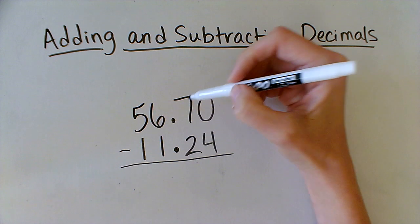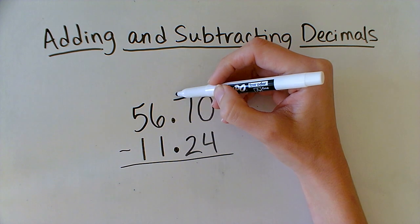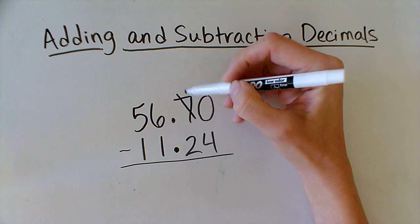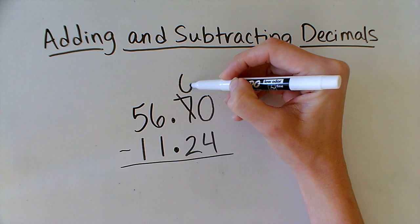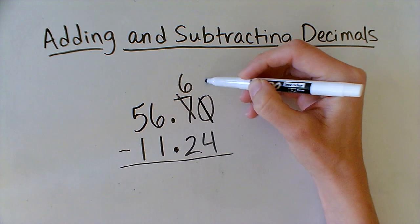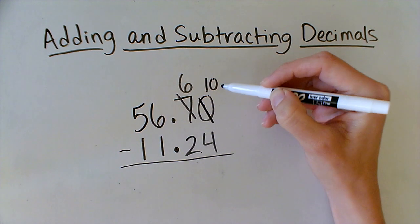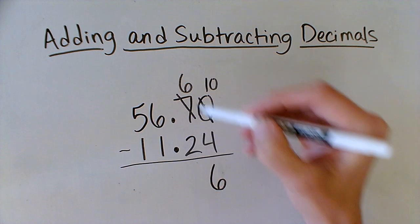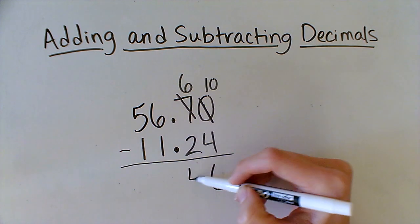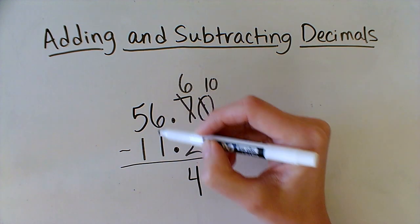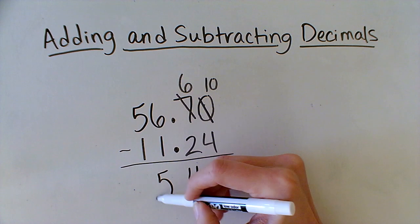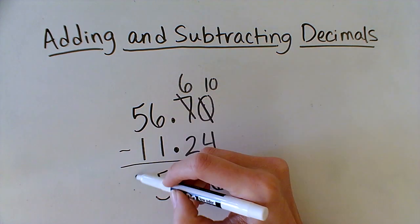I can subtract. I can't do 0 minus 4, so just like normal subtraction, I'm going to regroup by taking a group away. This becomes a 10. 10 minus 4 is 6. 6 minus 2 is 4. 6 minus 1 is 5. And 5 minus 1 is 4.